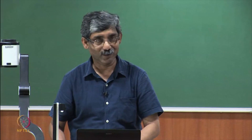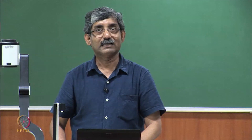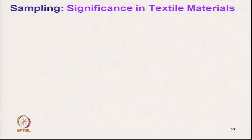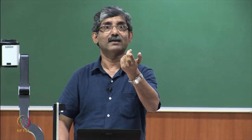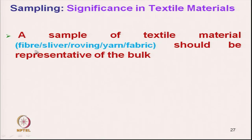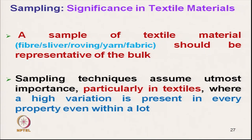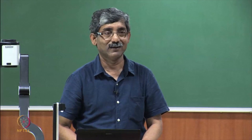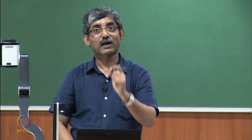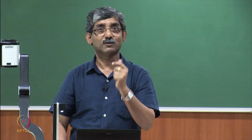For testing, one must know these terms — consignment, test lot, laboratory sample, and test specimen — to avoid any confusion. Sampling is important in textile material because the sampling of fiber, sliver, roving, yarn, and fabric should be representative of the bulk. Sampling technique assumes utmost importance because textile material is highly variable in nature, unlike other products where sampling is not so critical.